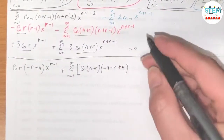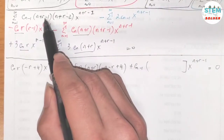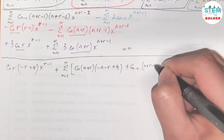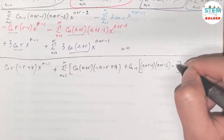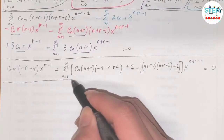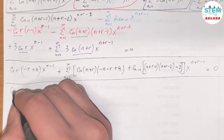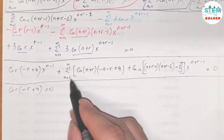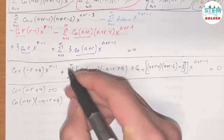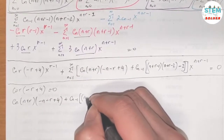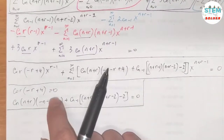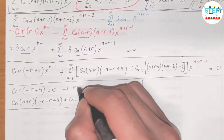Setting the coefficient of x to the r minus 1 to zero: c_0 times r times (negative r plus 4) equals 0. Setting the bracket in the series to zero: c_n(n plus r)(negative n minus r plus 4) plus c_{n-1}(n plus r minus 1)(n plus r minus 2) minus 2 equals 0. This is our system of equations. Solving for r gives r equals 0 and r equals 4. These are our r values, and for each we plug into the recurrence relation to solve for the series coefficients.